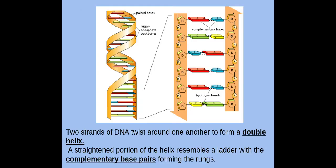Here in this image, we can see here that the two antiparallel polynucleotides, or strands of DNA, twist around each other to form a double helix.